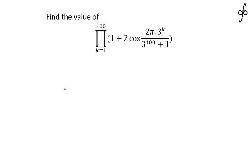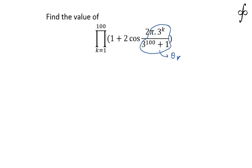Let us discuss the daily challenge problem. The problem says: find the value of the product of k equal to 1 to 100 of 1 plus 2 cosine(2π · 3^k / (3^100 + 1)). To start with, let us assume that the particular part π · 3^k / (3^100 + 1) is equal to θ_k, since it is a function of k. So let us analyze the term 1 plus 2cos(2θ_k).